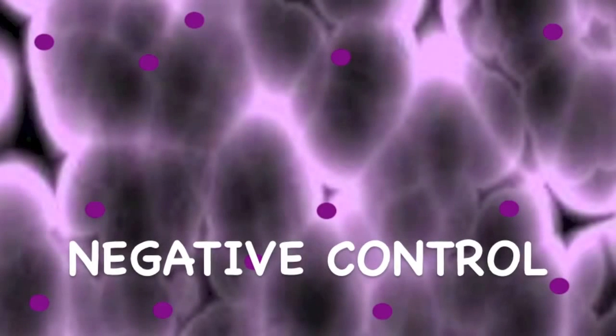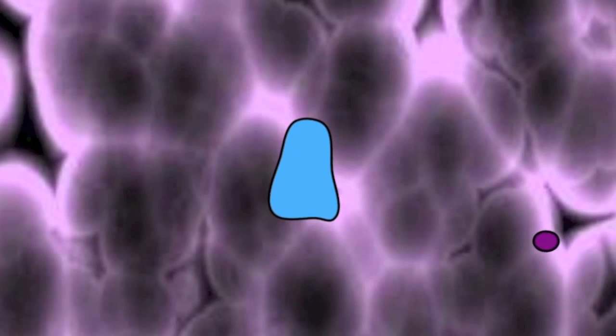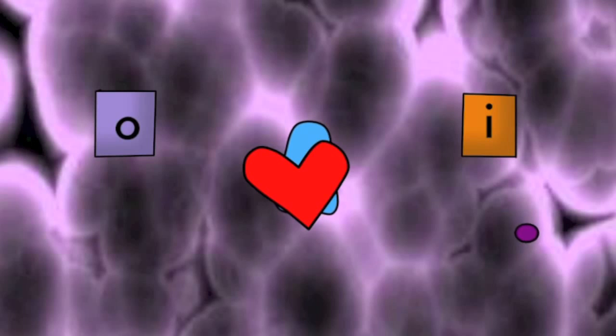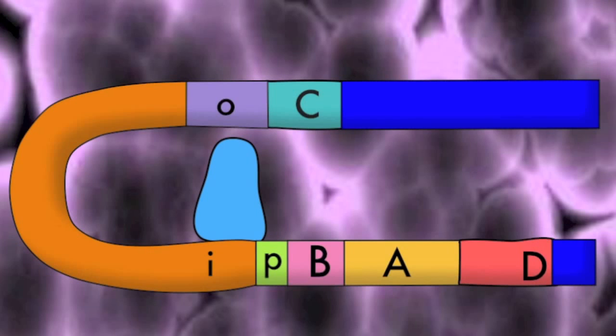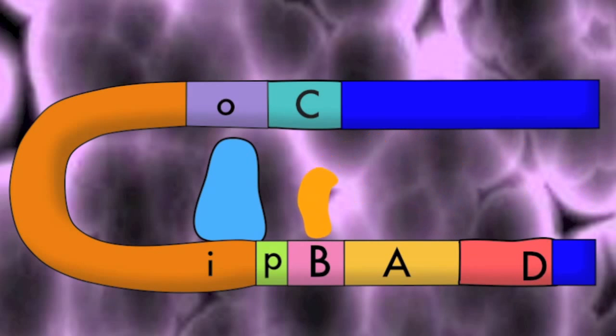Negative control. When arabinose concentration is low, the ARAC protein, which has no arabinose attached, has an affinity for ARAI and also for ARAO. Since there is no arabinose present, the ARAC protein folds the DNA and binds the ARAI site to the ARAO site in a hairpin loop that RNA polymerase has no affinity for. No polymerase, no transcription.